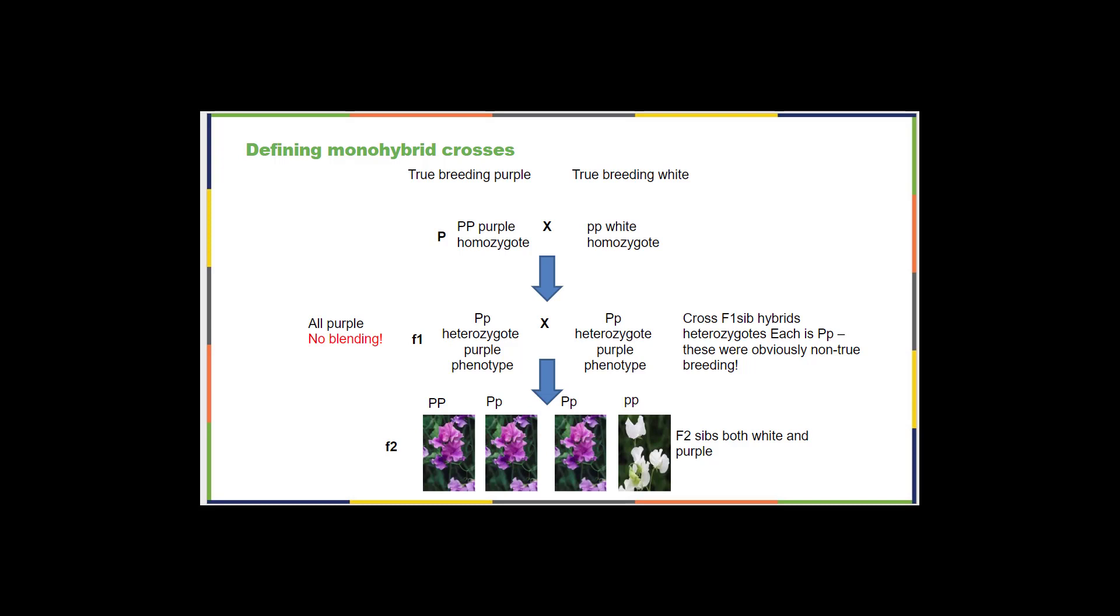His most important monohybrid crosses came from when you crossed two of those F1 siblings to create the F2 generation. And what he found was that 75% of the offspring were purple and 25% of the offspring were white. You can see their genotypes here on this chart. One purple individual is big P, big P purple. Two individuals are big P, little p purple. And one individual is a little p, little p white.